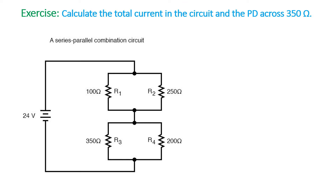The exercise asks you to calculate the total current in the circuit and the PD across the 350-ohm resistor. In this circuit the EMF of the battery is 24 volts. Current comes from the positive terminal and reaches junction A, dividing left and right. Current through R1 bends right, current through R2 bends left; they meet at junction B, combine, and come down to junction C where they divide again.